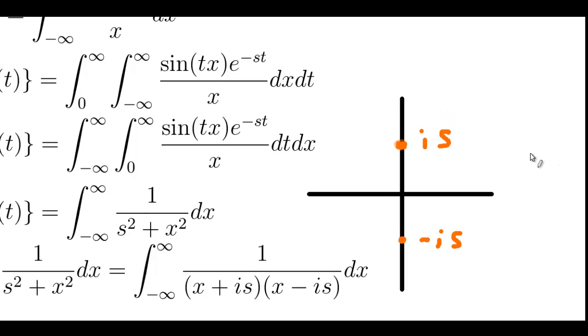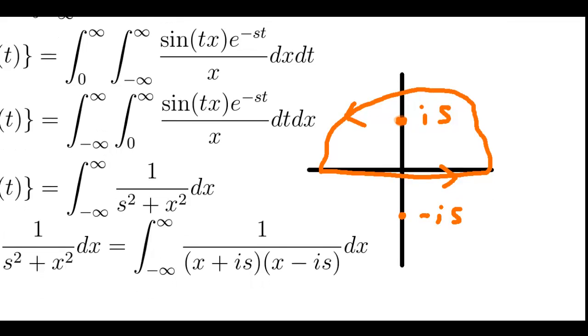We need to choose a contour to integrate over. The easiest contour to use for this is going to be a semicircular contour in the upper half of the complex plane. It's essentially something kind of like this. And we're going to integrate over that in the positive orientation, which is going to be clockwise.